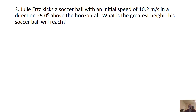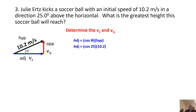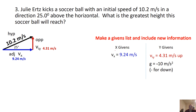Next question: Julie Ertz kicks a soccer ball with an initial speed of 10.2 meters per second at 25 degrees above the horizon. What's the greatest height the ball will reach? Before we address that, let's find our components. VX is the adjacent side: cosine of 25 times 10.2 gives 9.24 — make sure your calculator is in degrees. For the initial VIY, the opposite side: sine of 25 times 10.2 gives 4.31 meters per second.